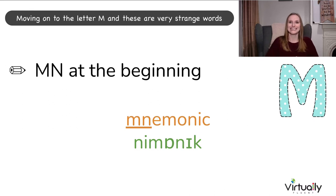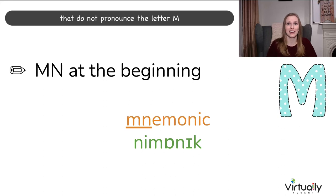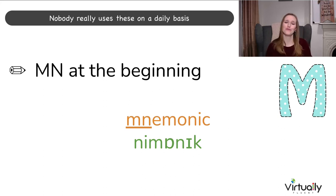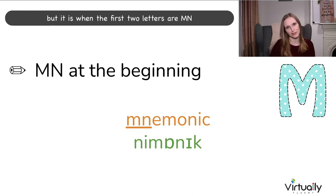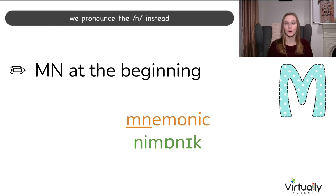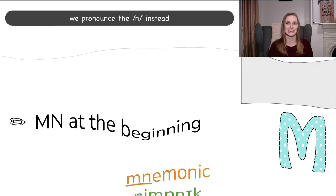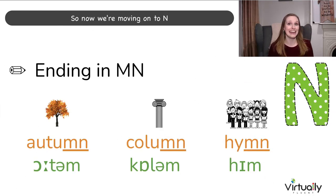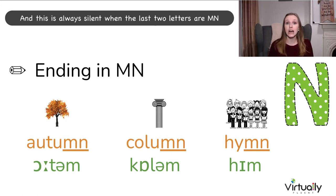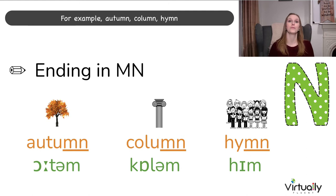Moving on to the letter M. These are very strange words that do not pronounce the letter M — nobody really uses these on a daily basis. It is when the first two letters are MN. For example: mnemonic — we pronounce the N instead. Now moving on to N. This is always silent when the last two letters are MN. For example: autumn, column, hymn.